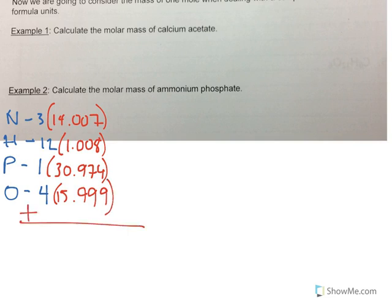So, we are going to multiply each number by the number of atoms, and then add this all together. We can do it in one step in our calculator. So, we are going to do 3 times 14.007 plus 12 times 1.008 plus 1 times 30.974 plus 4 times 15.999. And that gets us a total mass for ammonium phosphate of 149.087. And that is grams per mole of (NH4)3PO4.